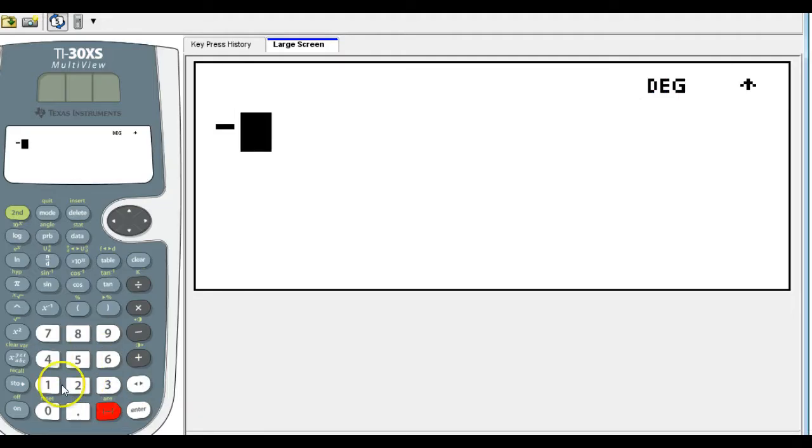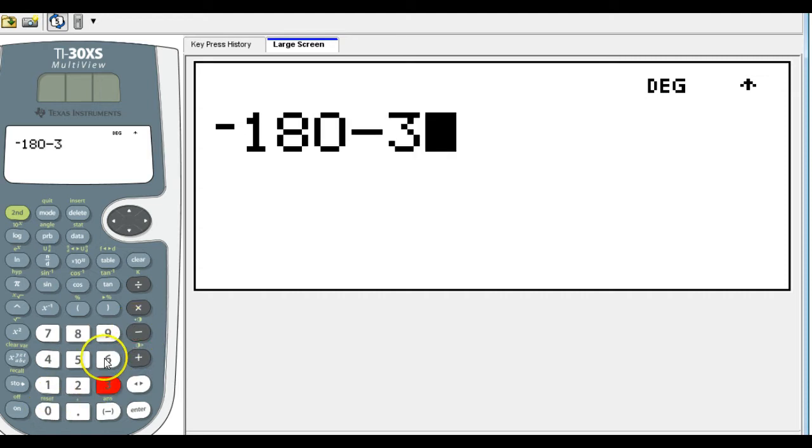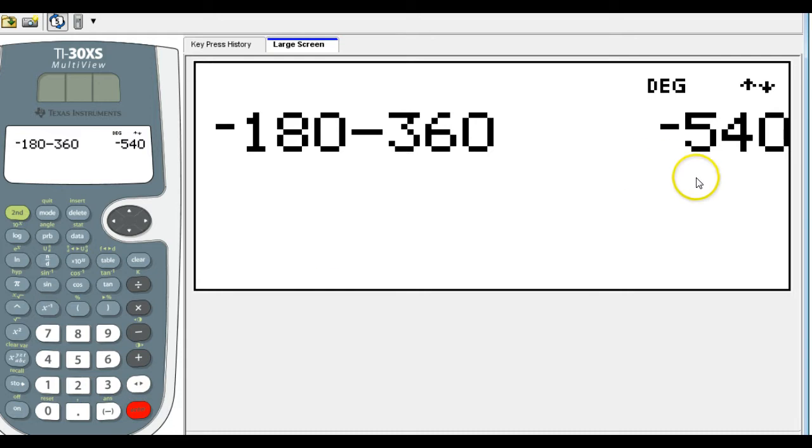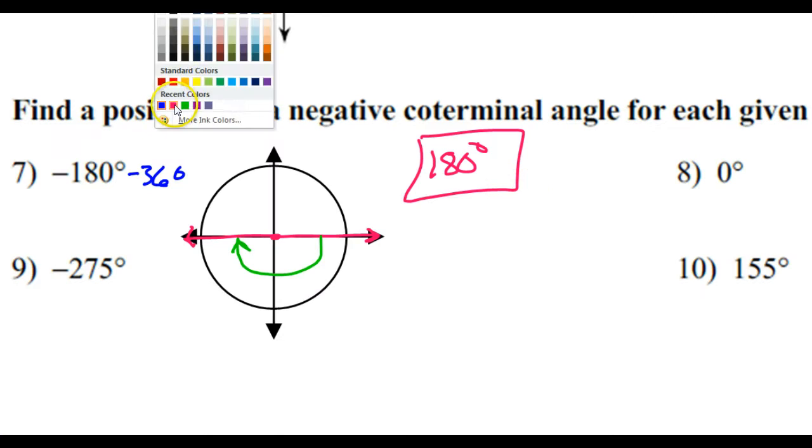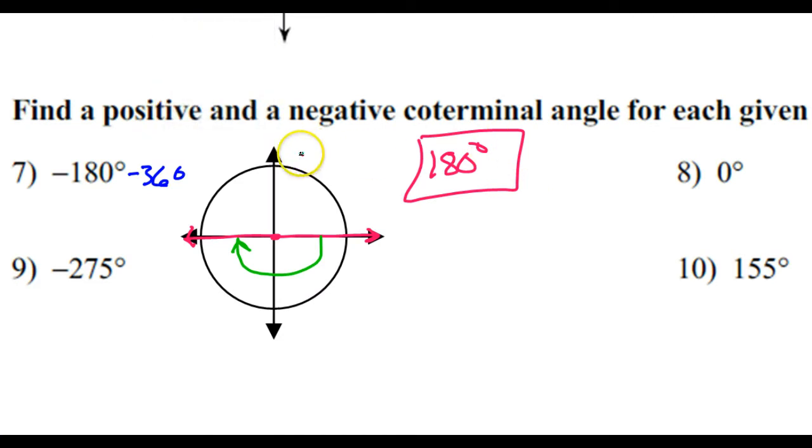So, let's see, negative 180 minus 360, that's negative 540. So there's a positive and negative coterminal angle for number 7.